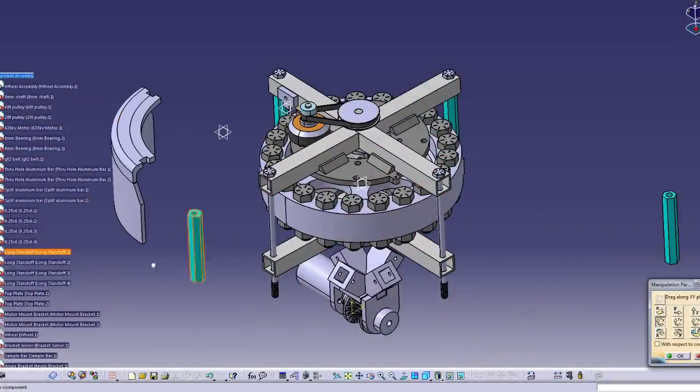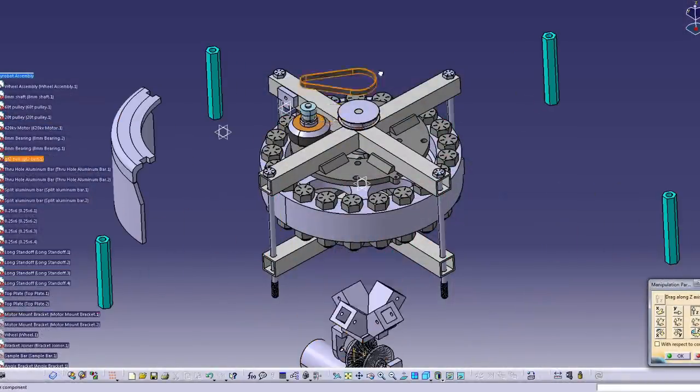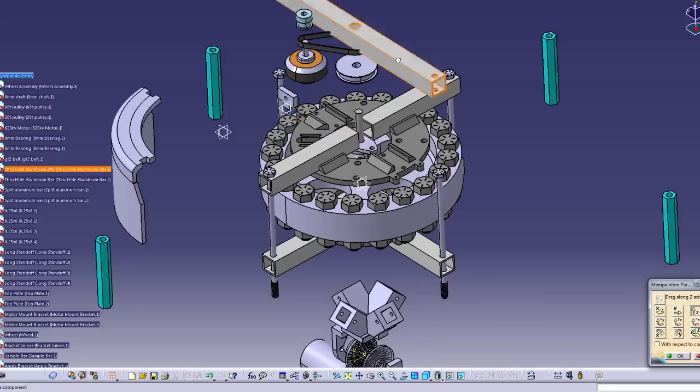After an hour or two of CAD work I came up with this design that uses a 3D printed flywheel with thick bolts around the outer edge to increase the rotational inertia.